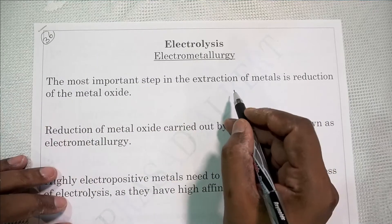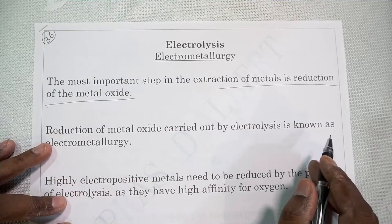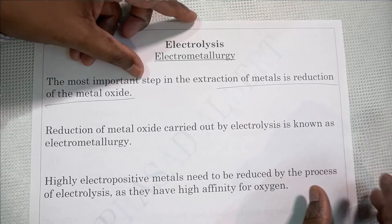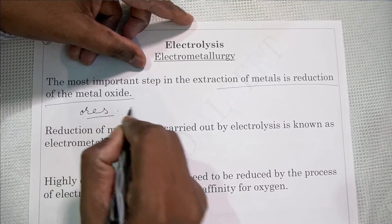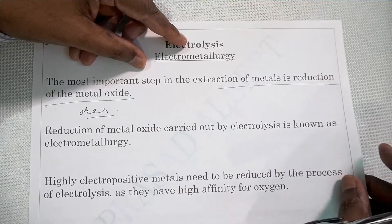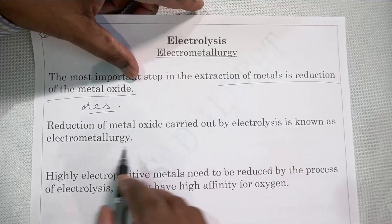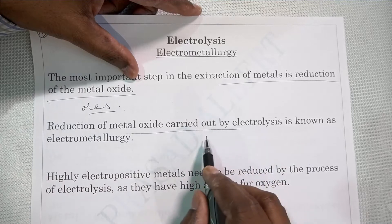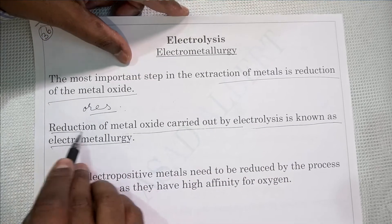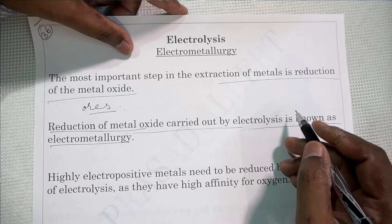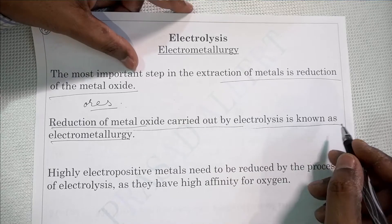The most important step in the extraction of metals is the reduction of the metal oxide. Metals are obtained from the earth in the form of ores, and then we extract metals from them. The metal oxide is converted to metal by a process called reduction. The reduction of metal oxide carried out by electrolysis is known as electrometallurgy.